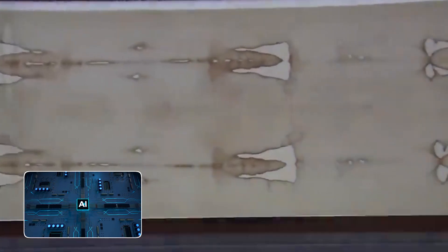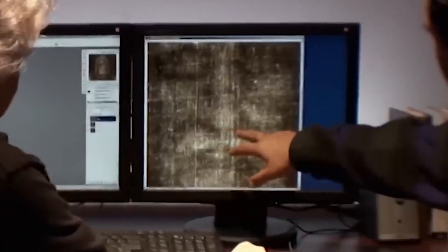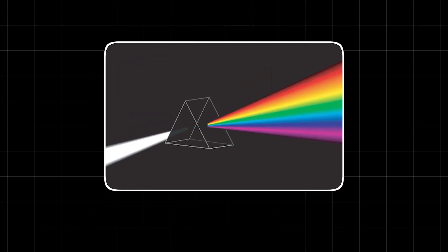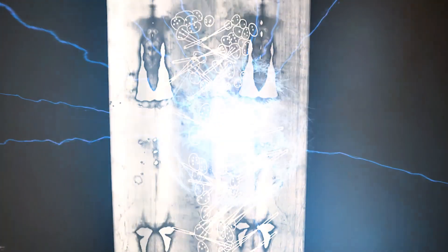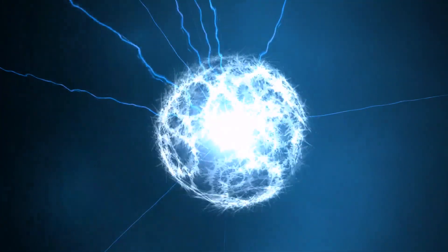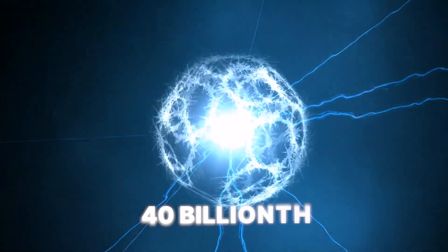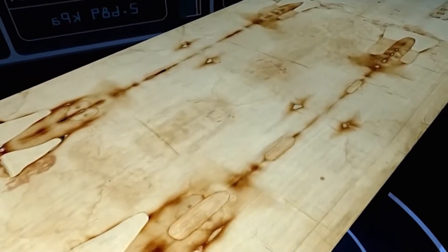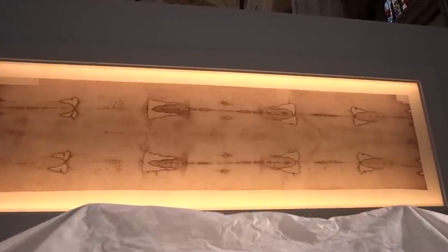The research team used the new geometric code as a baseline to model the event that could create it. The results are mind-bending. The AI's simulation showed that to create this image and its underlying mathematical signature, it would require a burst of radiation, most likely ultraviolet light, so powerful it's hard to even imagine. We're talking about billions of watts of power, all released in a flash lasting less than 1 40 billionth of a second. This is an energy event with no known parallel. It's a level of power that modern science can barely produce in a lab, let alone control with such precision.